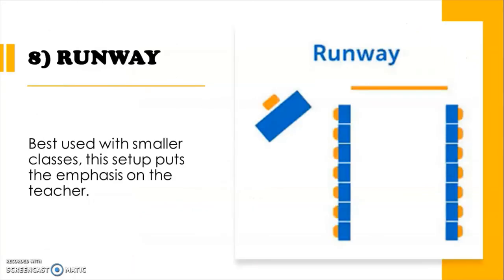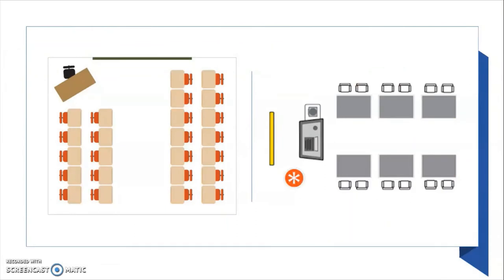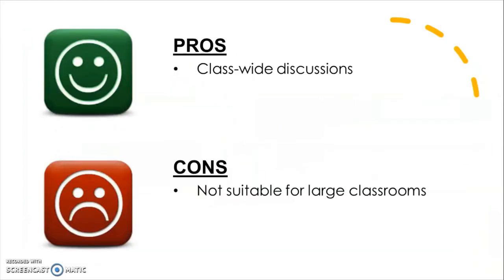The eighth one is runway, best used with smaller classes. This setup puts the emphasis on the teacher. The teacher uses the runway between two rows of facing desks to conduct lessons. This layout is great for discussions and lecture-based classes. Pros: it places emphasis on the teacher by assuring all eyes are on the lesson, and the seating arrangement is best suited for classrooms that hold a lot of lectures and class-wide discussions. Cons: due to the amount of space it takes up, this style is not suitable for large class sizes, and this type of grouping can also make group and partner work tricky.